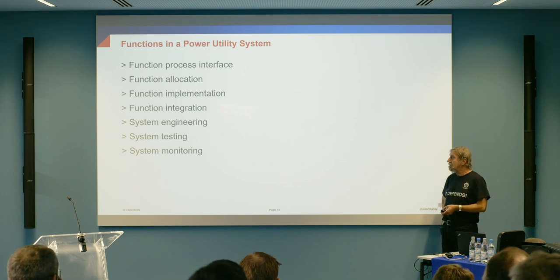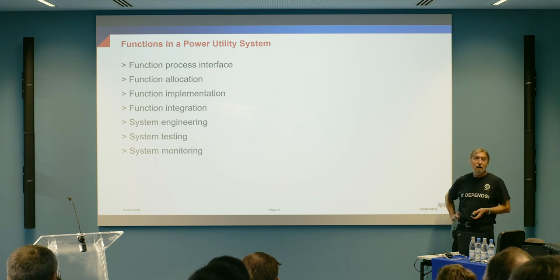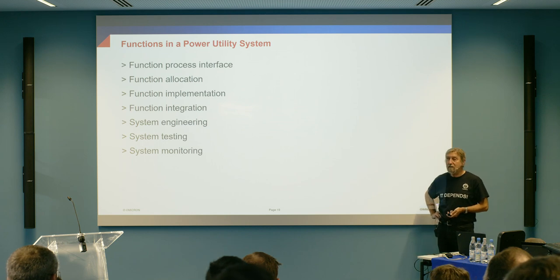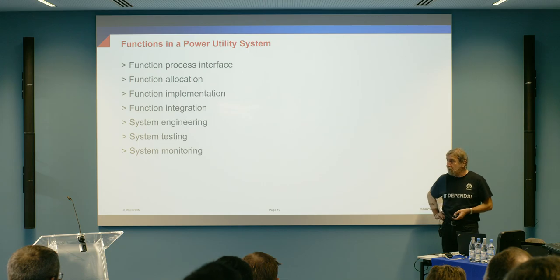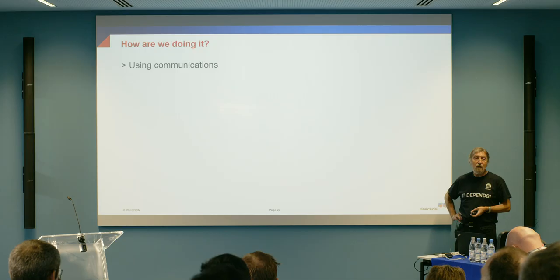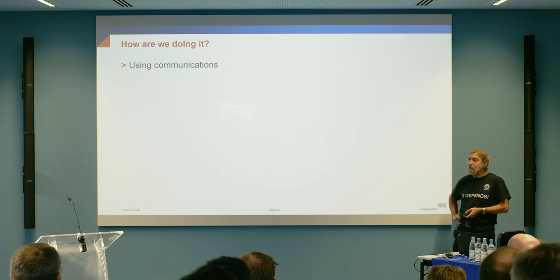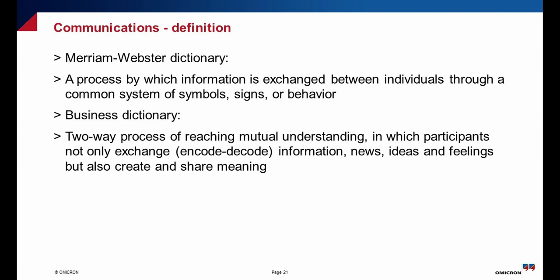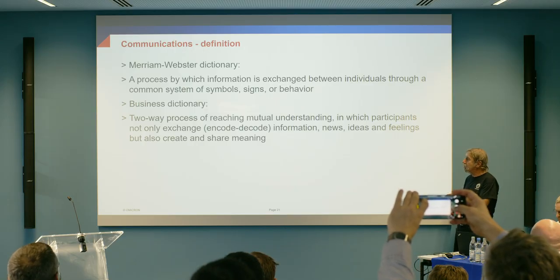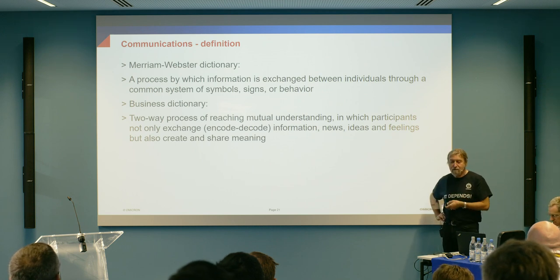The same applies for system testing — how you're going to test the system at the different stages of the life cycle of a protection, automation and control system is a critical requirement, as well as system monitoring. So finally I'm getting to the answer of the last question: how are we doing it? The answer is using communications. We live in a world that we cannot imagine without communications. What is communications? It is a process by which information is exchanged between individuals through a common system of symbols, signs or behavior — or a two-way process of reaching mutual understanding.